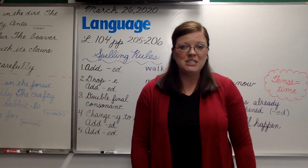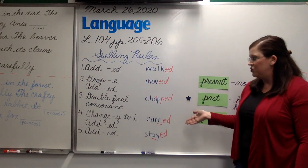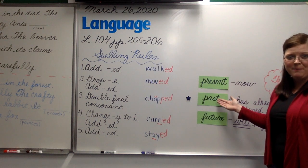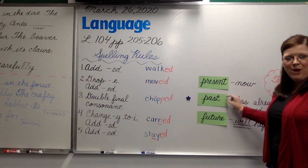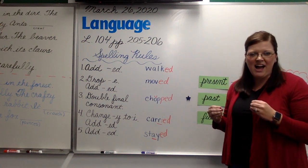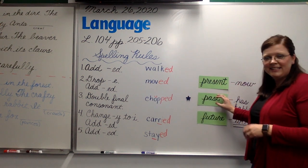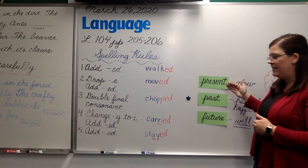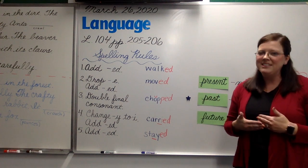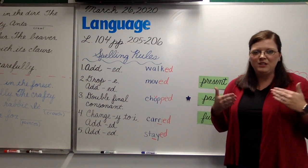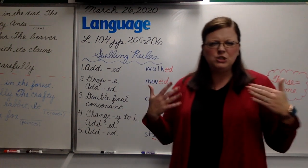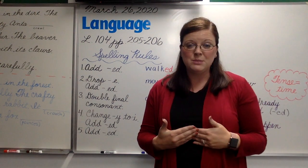Yesterday we talked about the five rules on how to change a verb from the present tense to the past tense. Today we're going to combine yesterday's lesson and the previous lesson to see if we can differentiate — it just means if we can tell the difference between the two. We're listening for that D sound, and that's usually going to signal to us that it's past tense.